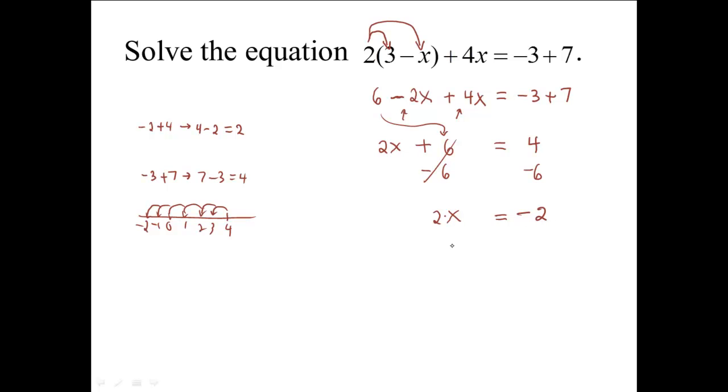Then finally, since 2x means 2 times x, we will divide both sides by 2. 2 divided by 2 is 1, and 1 times x is written more simply as x. Here we have negative 2 divided by 2, which is negative 1. Our answer is x equals negative 1.